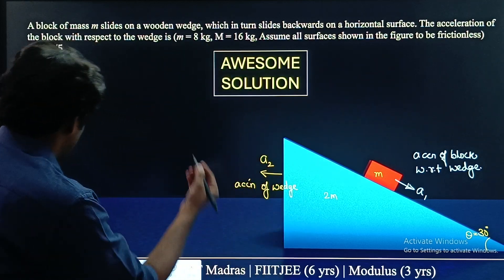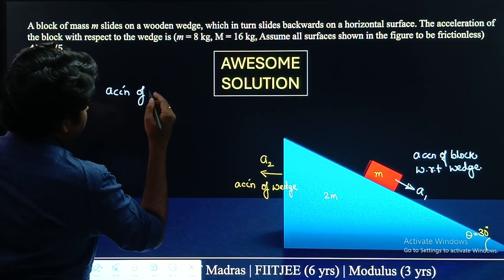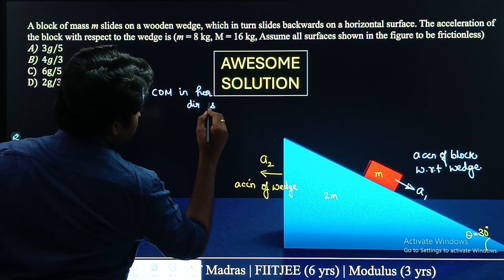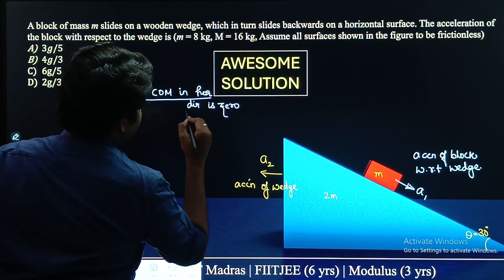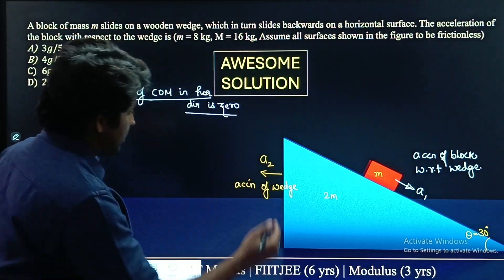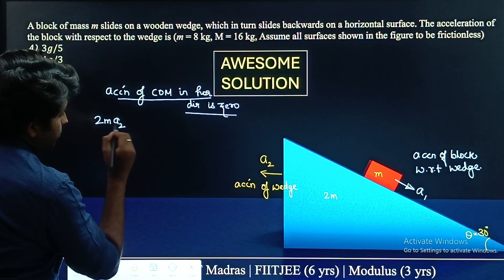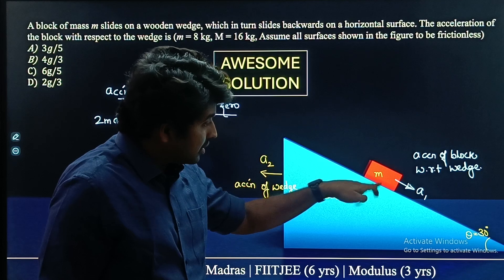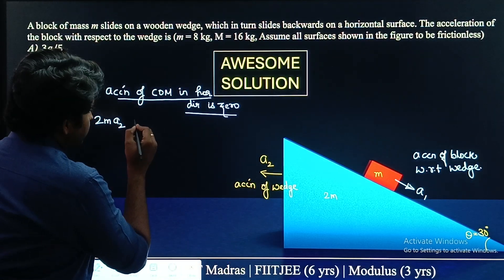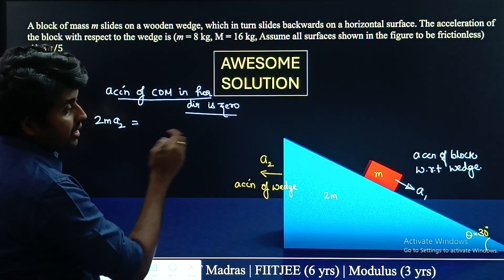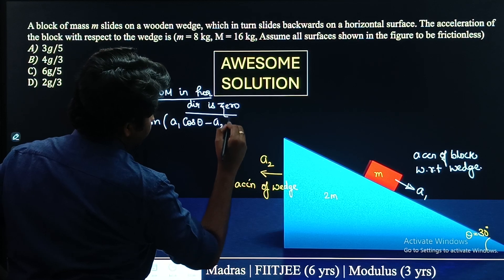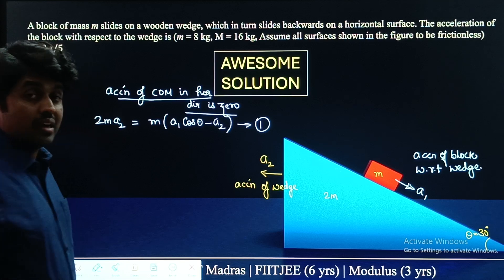So let us write this down. The acceleration of the center of mass in the horizontal direction is zero. In the horizontal direction, the wedge contributes 2M times A2, and the block's horizontal acceleration is A1 cos θ minus A2. Setting the total equal to zero gives us Equation 1: 2M·A2 + M·(A1 cos θ − A2) ... rearranged, this is our first equation.